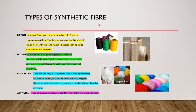Types of synthetic fiber: rayon, nylon, polyester, acrylic. Rayon is made from pure cotton or wood pulp. Its fibers are long, smooth and shiny. They have the same properties as that of silk. It sheds dirt easily. It is a good conductor of heat and cool to wear. It can be mixed with cotton to make bedsheets and can be mixed with wool to make carpets. This is an example of rayon.